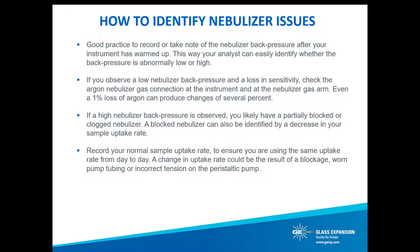Glass Expansion's Direct Connect concentric nebulizers run optimally at, for example, 40 PSI. If you observe a low nebulizer back pressure and a loss in sensitivity, check the nebulizer gas connection at the instrument itself or at the nebulizer gas arm. Other nebulizer models might use a PVC or polymer tube to supply gas to the nebulizer — these can harden over time, lose their flexibility, or lose their gas-tight grip. Even a 1% loss of argon flow can produce changes of several percent with many ICP analytical lines, and you want to maintain a constant nebulizer back pressure for a constant steady signal. If a nebulizer has a high back pressure, you likely have a partially blocked or clogged nebulizer.